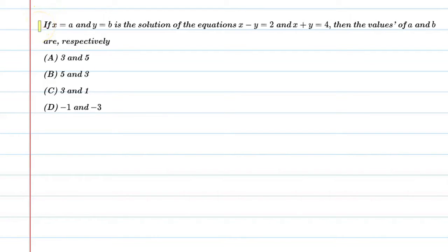Hello students, let's solve this question. If x equal to a and y equal to b is the solution of the equation x minus y equal to 2 and x plus y equal to 4, then the values of a and b are respectively.